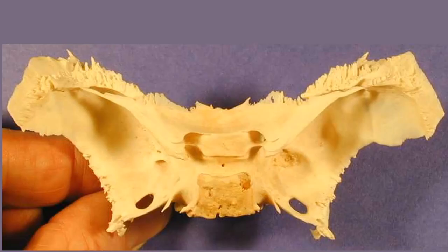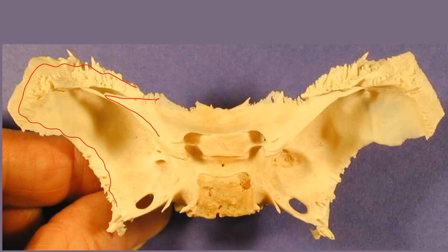Here the bone is a sphenoid bone. I can point out the lesser wing here and the greater wing out here. If I could look under the lesser wing I could see a superior orbital fissure, but if it's not tilted forward enough I can't see it. I can see foramen rotundum, foramen ovale, and down here somewhere is foramen spinosum. Here are the optic canals where the optic nerves would pass through.